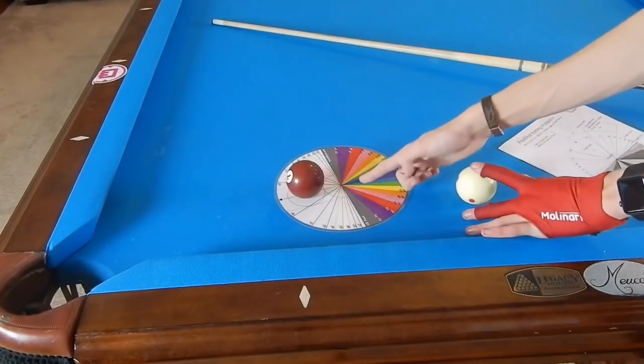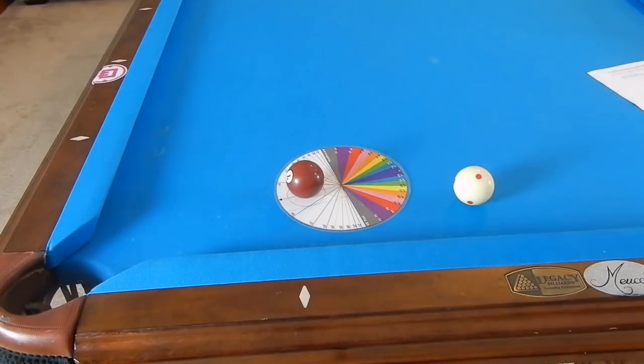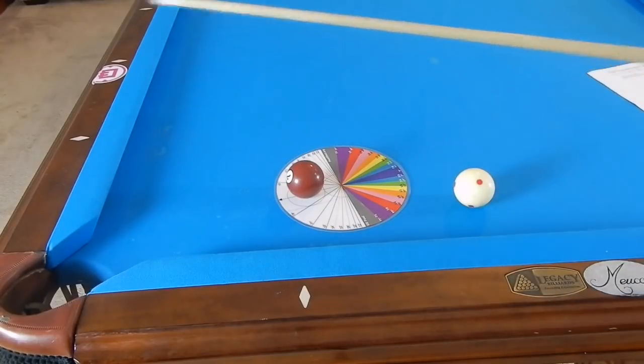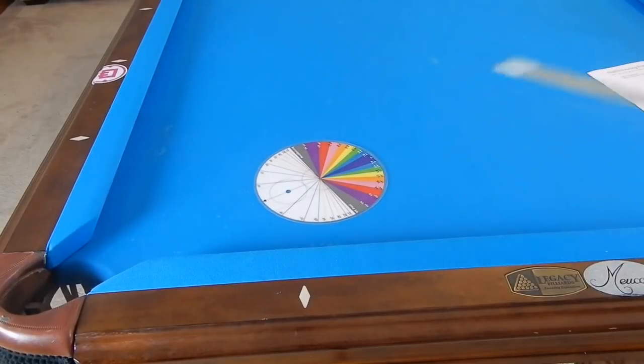If our cue ball is coming from this line, then our draw angle will be 90 degrees, so we will draw along the 90-degree line which is the tangent line. If we're cutting at 30 degrees we're drawing along the tangent line, and that actually leads us right to this corner pocket.